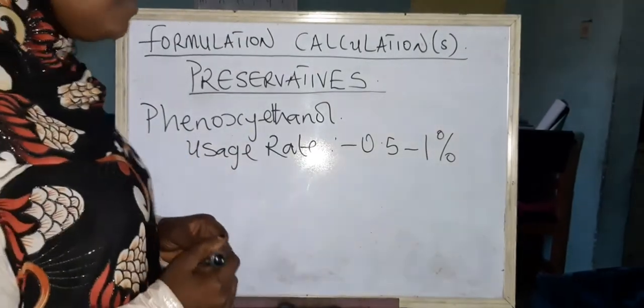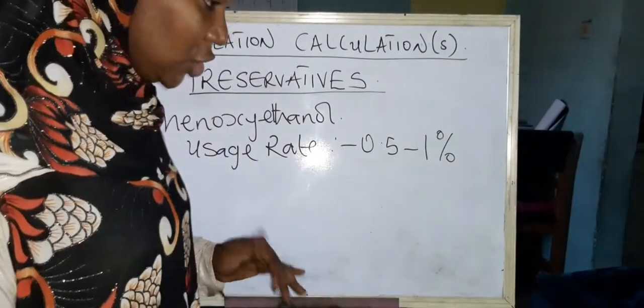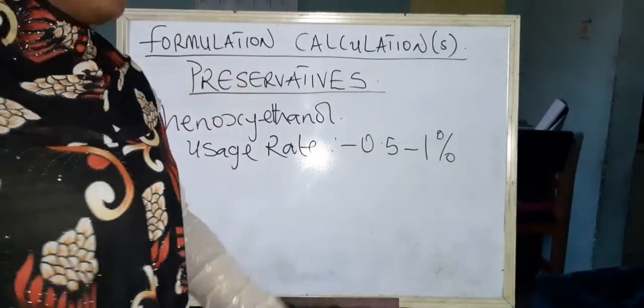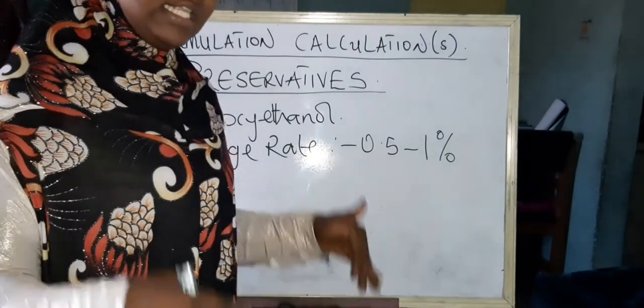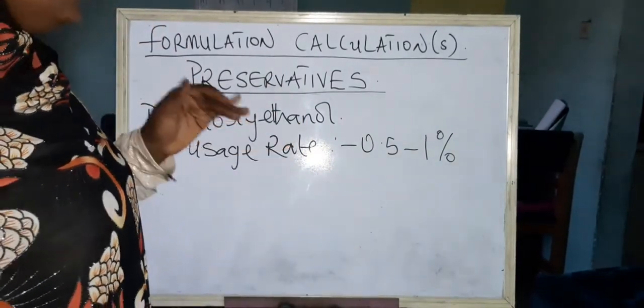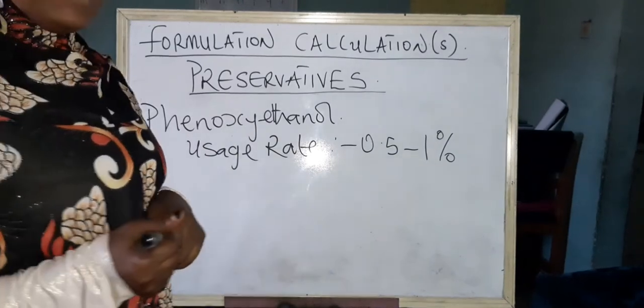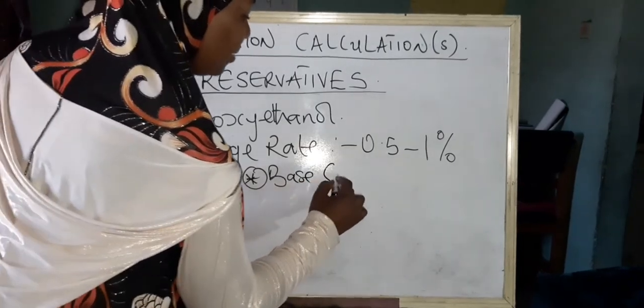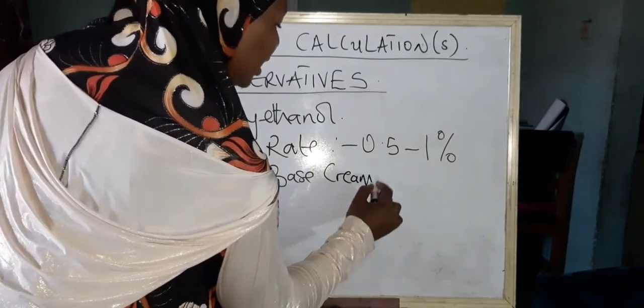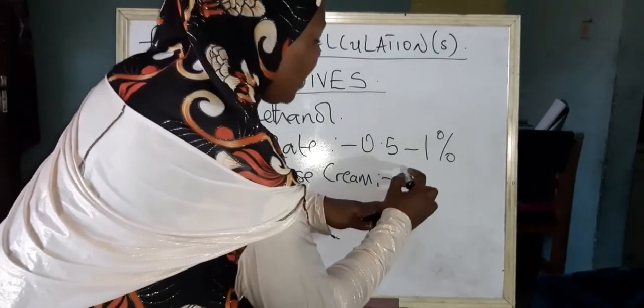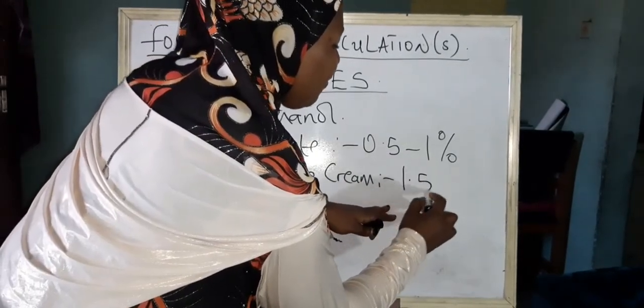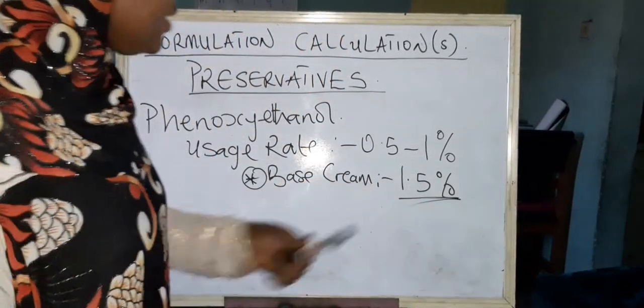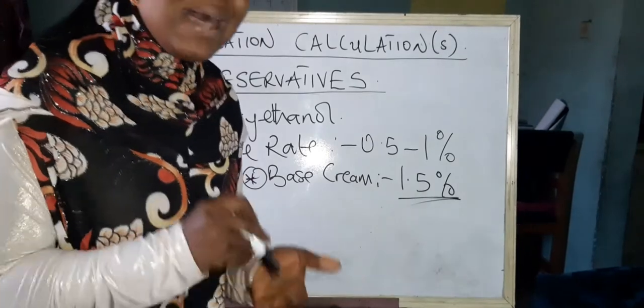But let me tell you something quickly. There are some special formulations you will make. I call them special in the sense that those formulations are made with the intention of adding other ingredients into them. An example of such ingredients is the base cream. I have a video where I made a base cream from scratch. Now in that base cream, I worked a preservative at about 1.5 percent. Let me tell you why I had to add the 0.5. The reason I did that was because that base cream is prepared for the intention of making other formulations out of that same base cream.